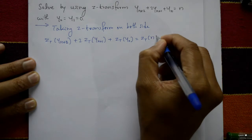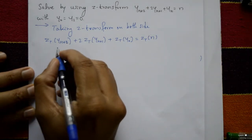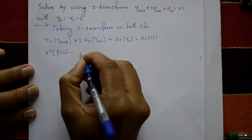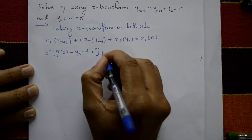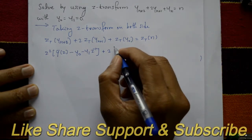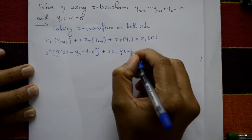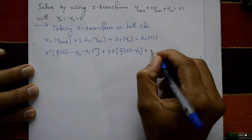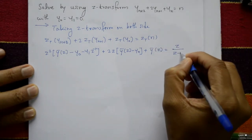Z-transform of y(n+2) is z² [Y-bar(z) − y(0) − y(1)·z⁻¹]. Z-transform of y(n+1) is z[Y-bar(z) − y(0)]. Z-transform of y(n) is Y-bar(z). The right-hand side Z-transform of n is z/(z−1)².